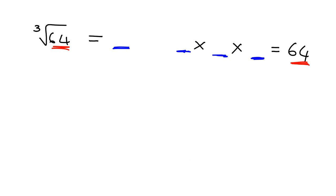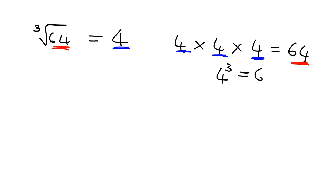Cube roots are basically the same sort of idea. If I ask you what's the cube root of 64, what I'm asking is what multiplied by itself three times gives you 64 as the answer. You should know from your previous work that 4 times 4 times 4 — 4 cubed — gives you 64. So the cube root of 64 is just 4. You can see they're opposite: cubes and cube roots. 4 cubed is 64 tells you that the cube root of 64 is equal to 4.